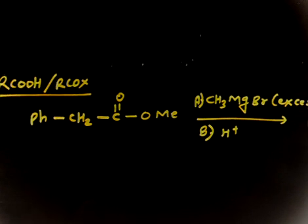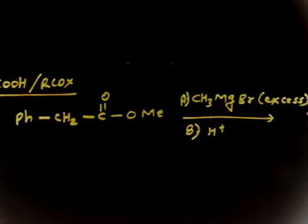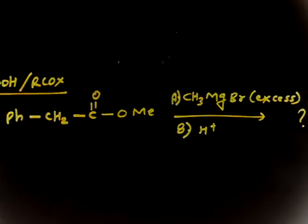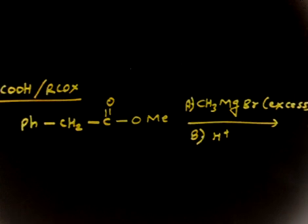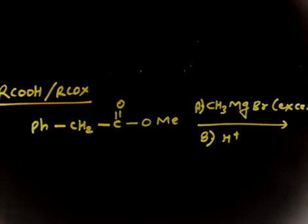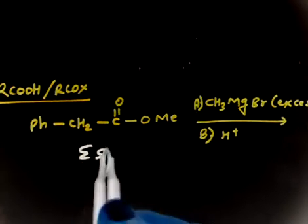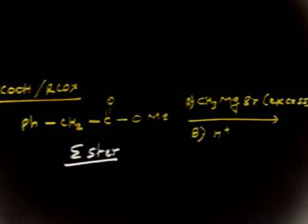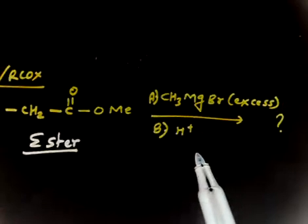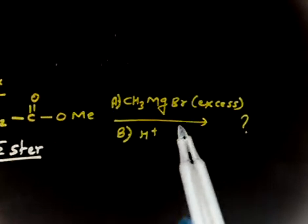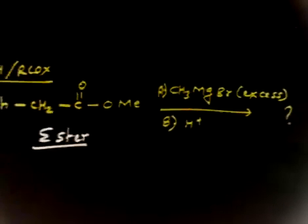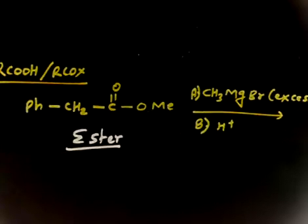Okay, so you have an ester treated with Grignard reagent taken in excess, then acidification in step B. You have to write down the product. This ester is treated with Grignard reagent and H+, then you have to write the final product. Let me see how many of you can do this easy one.